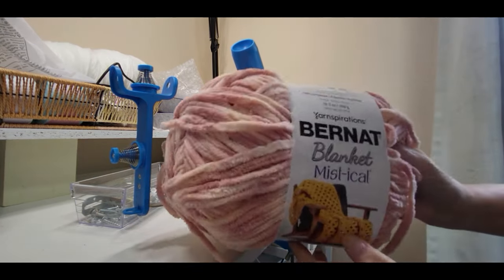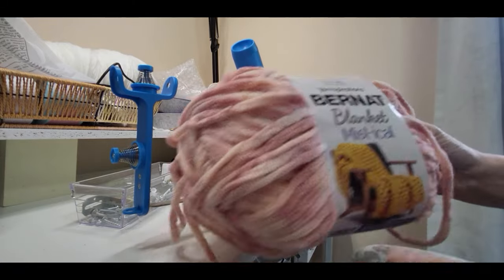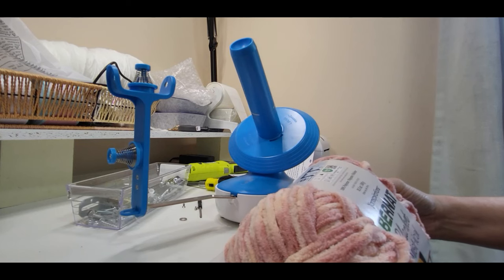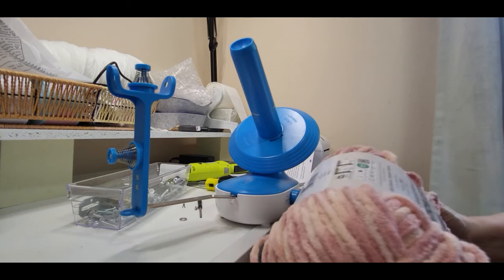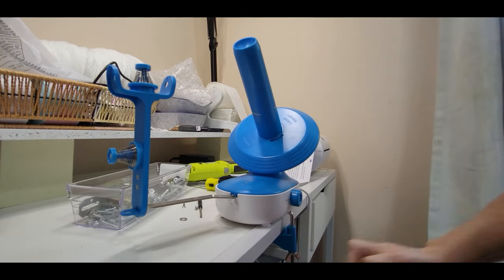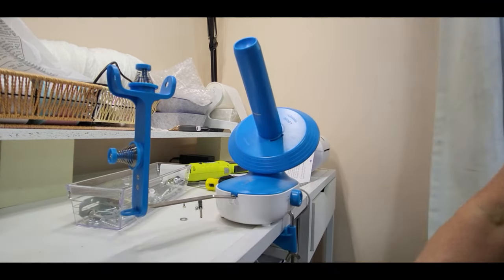Now we've got the Bernat Blanket Mystical. So this has 300 grams, 220 yards, 201 meters. Let's see how this fares. I did the yarn barf ahead of time so that you don't have to sit through that.